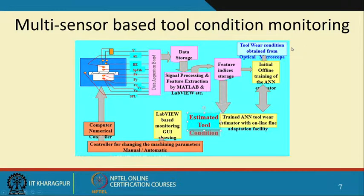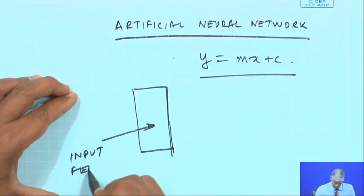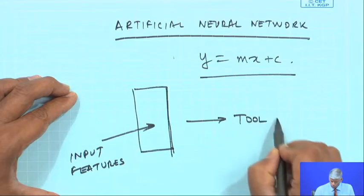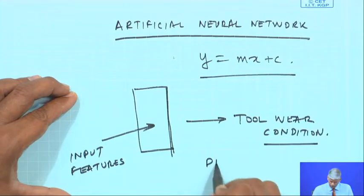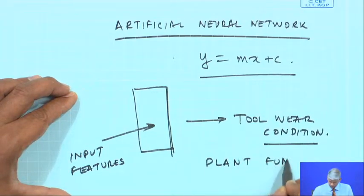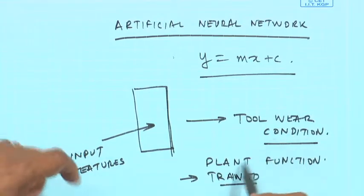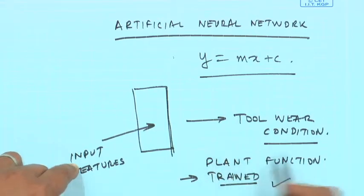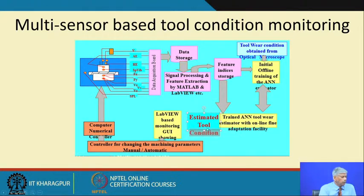What we did is we mapped all the input features to the tool wear condition and developed a transfer function which was trained like you do in a neural network. Henceforth, with a trained transfer function from the ANN model, for any input features it can very easily predict the tool wear. We estimate the tool wear by having an online adaptation facility.